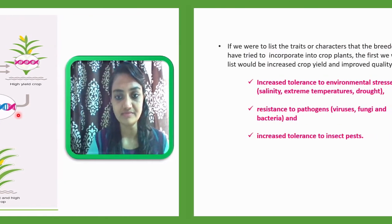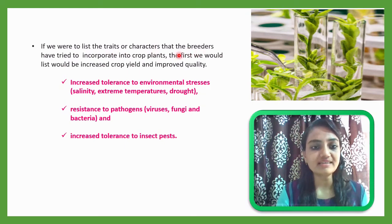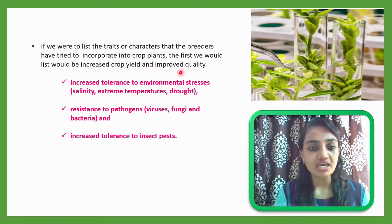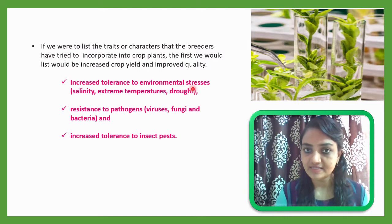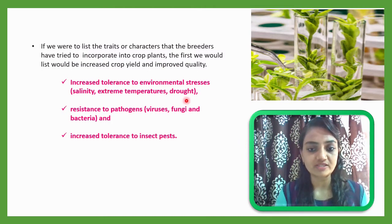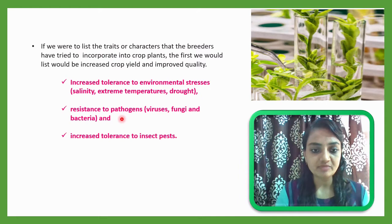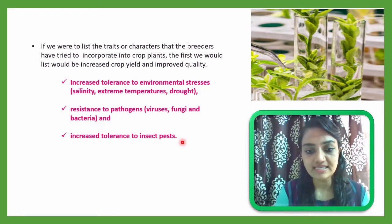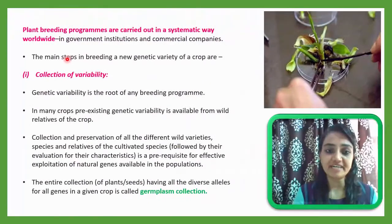If we were to list the traits that breeders have tried to incorporate into crop plants, the first would be increased crop yield and improved quality. This is followed by increased tolerance to environmental stresses such as salinity, extreme temperature, and drought. Resistance to pathogens like viruses, fungi, and bacteria is also a main goal, along with increased tolerance to insect pests.